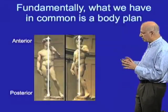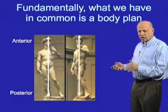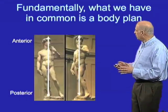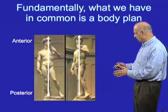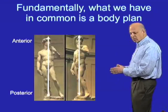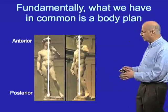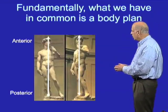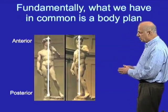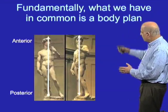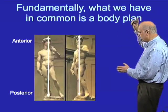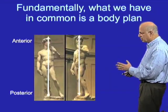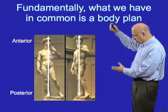First we have to talk about the basic organization of an animal. All animals — a representation being Michelangelo's sculpture of David — have an anterior head end and a posterior axis, so there's a basic organization along that axis.